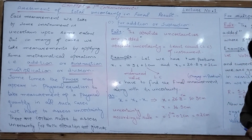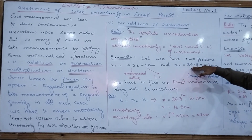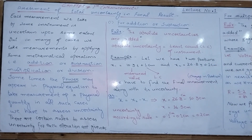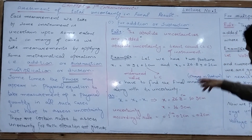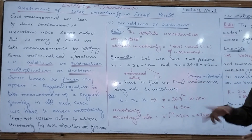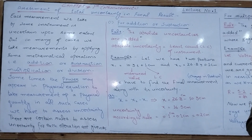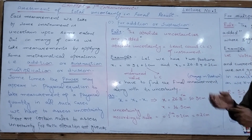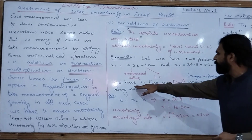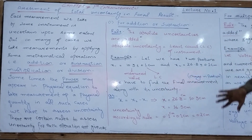The second position of the same object is x2 = 26.8 ± 0.1 cm. This 0.1 cm is again the least count of the measuring instrument, and 26.8 is the measured value. We have to find the change in position along with its uncertainty.